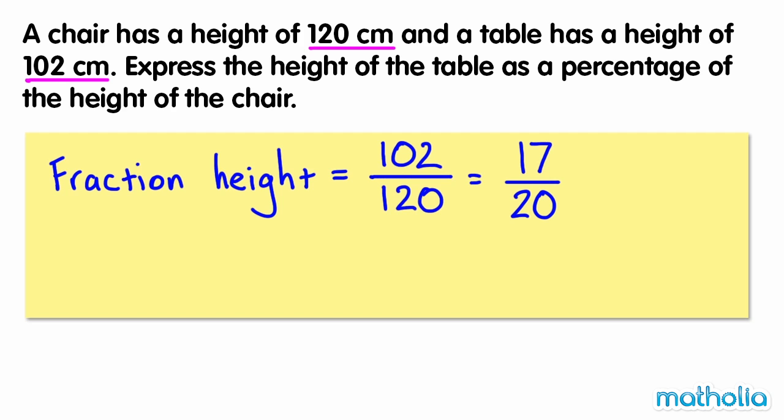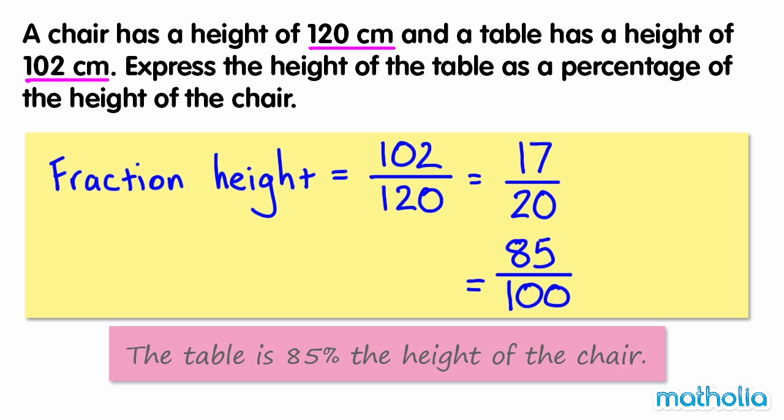To express this as a percentage, we need to find an equivalent fraction that has a denominator of 100. Multiplying both numbers by 5 gives 85 over 100. 85 one-hundredths equals 85%. So the table is 85% the height of the chair.